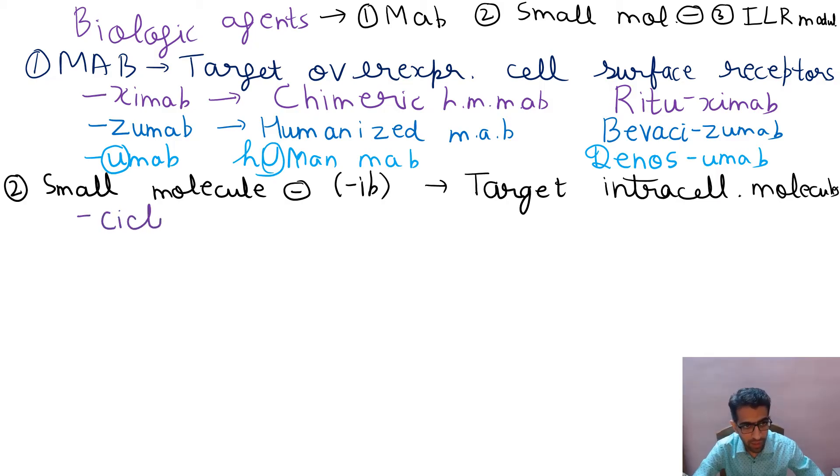Here we have a few important drugs like cyclib. Easy way to remember this, cyclib can be cyclin dependent kinase inhibitor. For example, palbociclib.